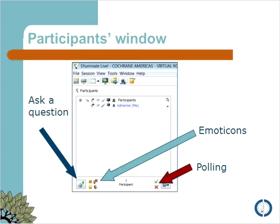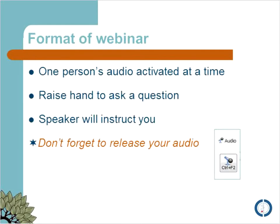The last function I'd like to introduce is the polling function. You'll see the red arrow here on the screen. We'll use a poll partway through today's session, and we'll ask you to use the green check mark to indicate yes, and the red cross to indicate no. For today's session, we only have one microphone activated at a time, to help the webinar go more smoothly. If you'd like to use the microphone, please raise your hand, and the moderator will indicate when it's your turn to speak. Please remember to turn off your audio by clicking on it again.